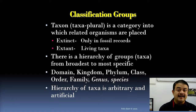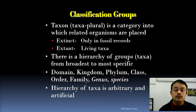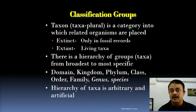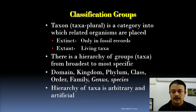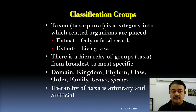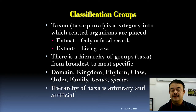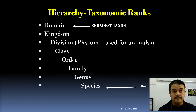There is a hierarchy of taxa from the broadest to the most specific — that much is certain — but the ranks themselves are arbitrary. The standard ranks are: domain, kingdom, phylum, class, order, family, genus, and species. This ranking system is artificial and arbitrary.